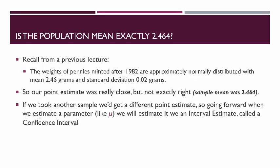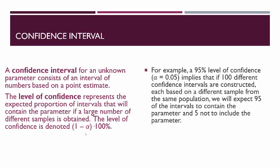Going forward, when we estimate a parameter like mu, we're going to estimate it with what we call an interval estimate, and this interval estimate will be called a confidence interval. A confidence interval for an unknown parameter consists of an interval of numbers based on a point estimate — it's a range of values from some lower bound all the way to some upper bound, and our estimate is this entire range.